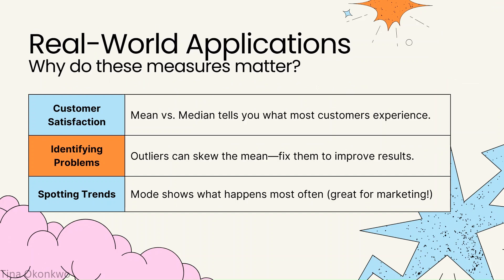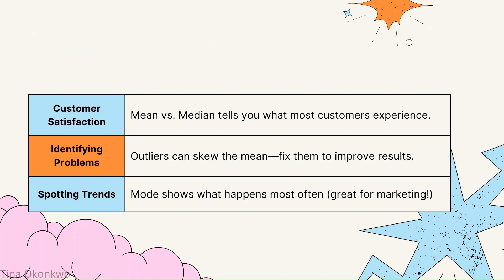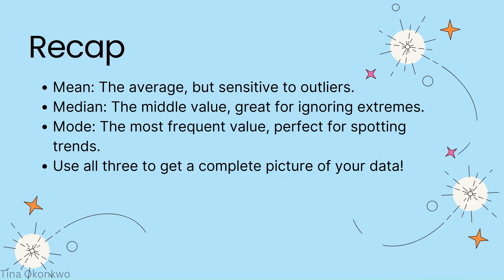Now let's connect this to the real world. For customer satisfaction: if your mean delivery time is 30 minutes but your median is 25 minutes, it tells you that most deliveries are actually faster than the mean suggests, so you can use that to market your service better. For identifying problems: if your mean is much higher than your median, you might have outliers — like a driver who's always late. Spotting and fixing those outliers can drastically improve your business. The mode tells you what happens most often, so if 20 minutes is the most common delivery time, you know most customers are happy with that speed.